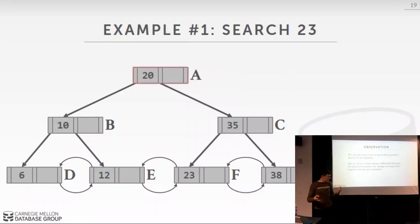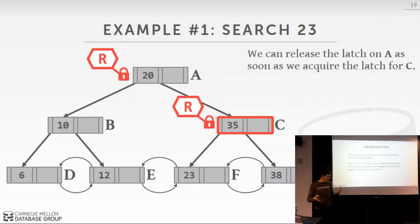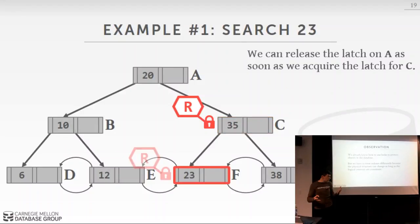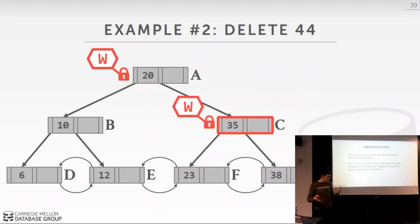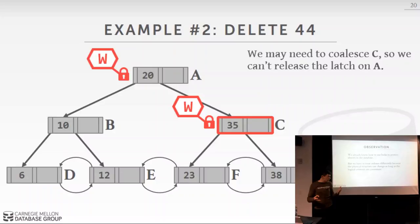For a search, start at the root, acquire read latches going down, releasing the parent latch after acquiring the child's read latch, until reaching the leaf. For insert or delete, acquire write latches all the way down. Once you acquire a write latch on a child and it's safe, you can release the write latches on ancestors. For example, searching for key 23: acquire read latch on A, move to C, release A, move to F, release C, then read the value.